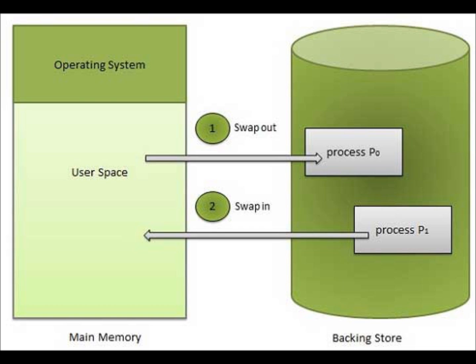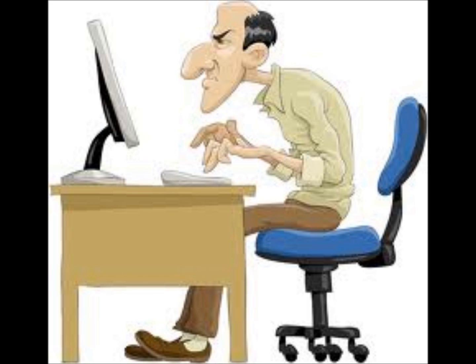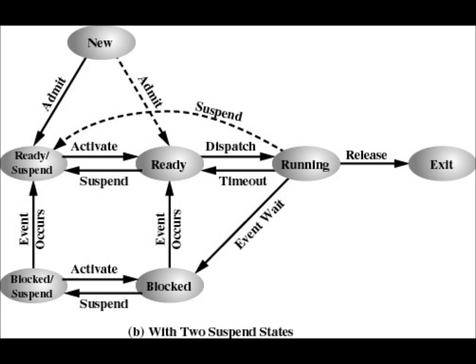There could be other reasons why it is shifted to secondary memory. For ease of understanding I'm just taking this context of it being a very low priority task. In that case, if it was already blocked and I swap it, it goes from blocked to blocked suspended. If it is ready and I swap it, it goes from ready to ready suspended. If it is blocked suspended and the I/O operation is done, it moves from block suspended to ready suspended.